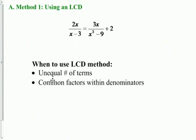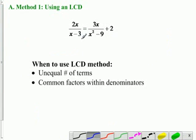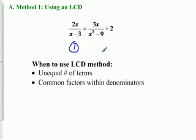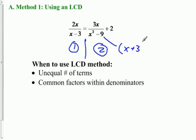Using the LCD method, there's a couple of things to think about. I want you to think about these things to identify when the LCD method is the preferred method, because I won't always tell you what to do. First, unequal number of terms. There's one term over here on this side of the equal sign, and there are two over here. So cross-multiplying won't help you. There are also common factors within the denominators. Remember, this guy right here becomes x plus 3, x minus 3. So it's really easy to use the same term and cancel a lot. So those are two things to think about for using this method.